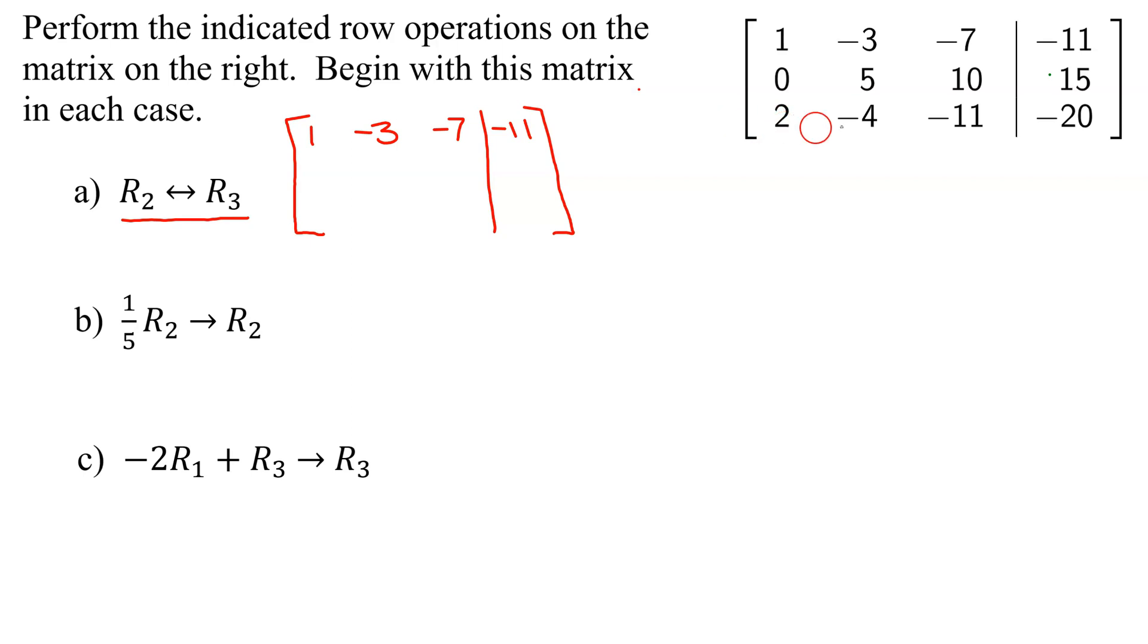Row 2 is going to be my old row 3, so it's going to be 2, negative 4, negative 11, and negative 20.